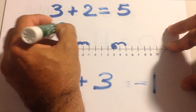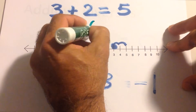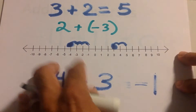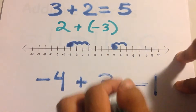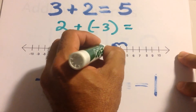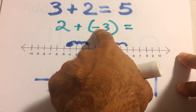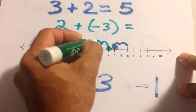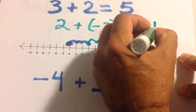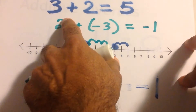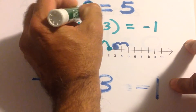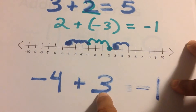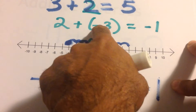What if we had two plus negative three? The negative three is in parentheses just to make it look cleaner. Start at two, and because we have a negative three, we go the other way — one, two, three to the left — and we get negative one. Positive numbers go right; negative numbers go left.